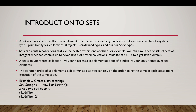A Set is an unordered collection of elements that does not contain any duplicates. Set elements can be of any data type — primitive types, collections, objects, user-defined types, built-in Apex types. A Set can contain collections nested within one another, up to seven levels of nested collections, eight levels overall. Since a Set is an unordered collection, we can't access a Set element at a specific index — we can only iterate over Set elements.